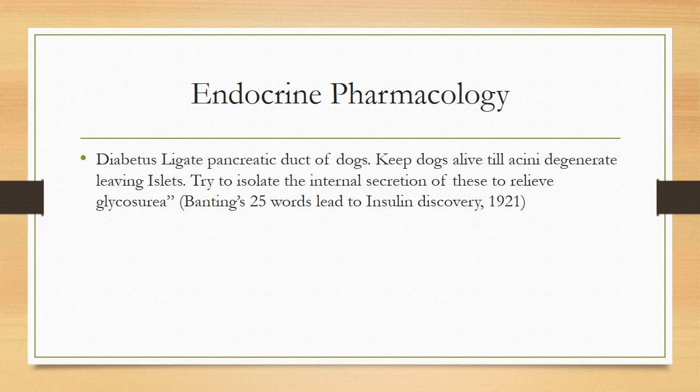In endocrine pharmacology, Banting's 25 words — to ligate the pancreatic duct of dogs, keep the dogs alive until the acini degenerate leaving the islets, then try to isolate the internal secretion of these to relieve glycosuria — finally led to the discovery of insulin in 1921.